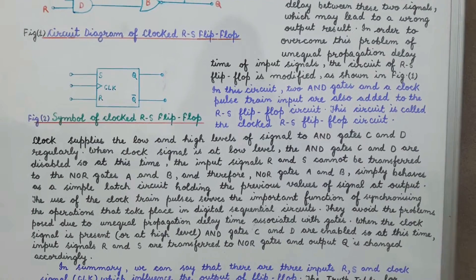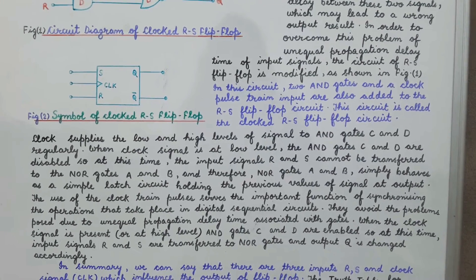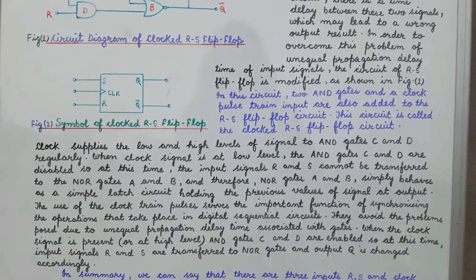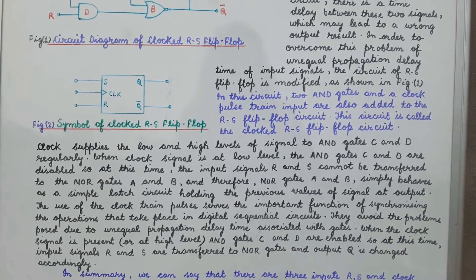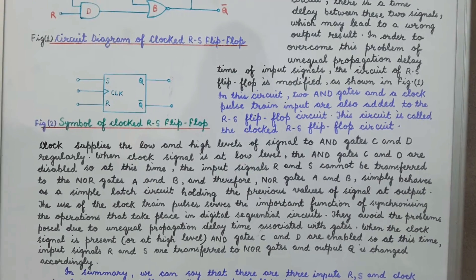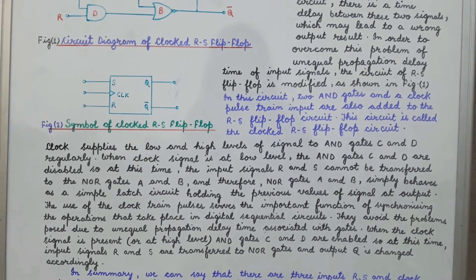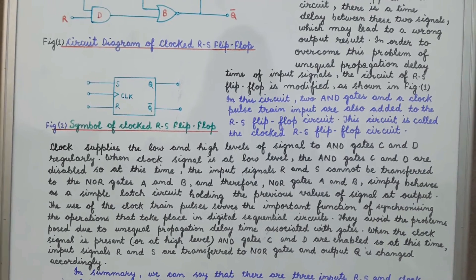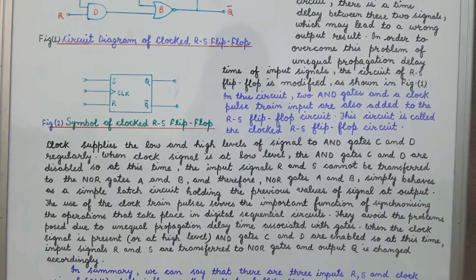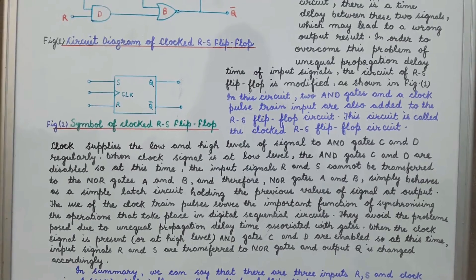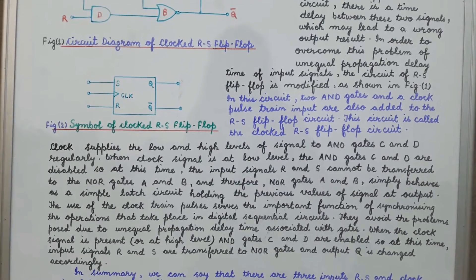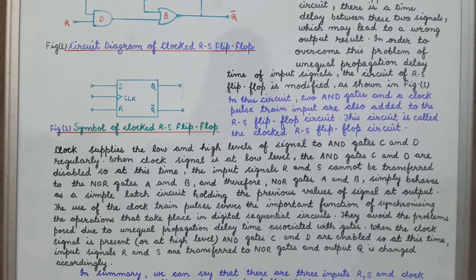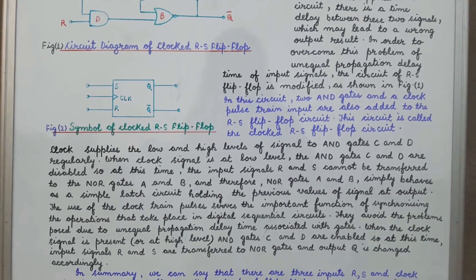When the clock signal is at a low level — suppose the clock signal value is 0 — then AND gates C and D are disabled. At this time, the input signals R and S cannot be transferred to NOR gates A and B, and therefore the NOR gates A and B simply behave as a simple latch circuit, holding the previous value of the signal at the output.